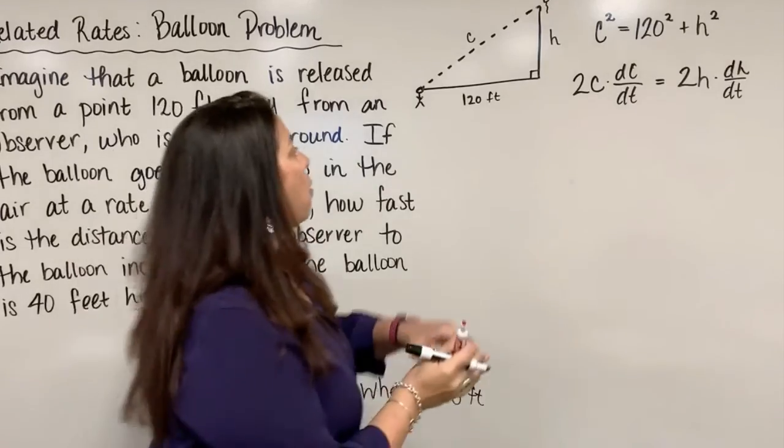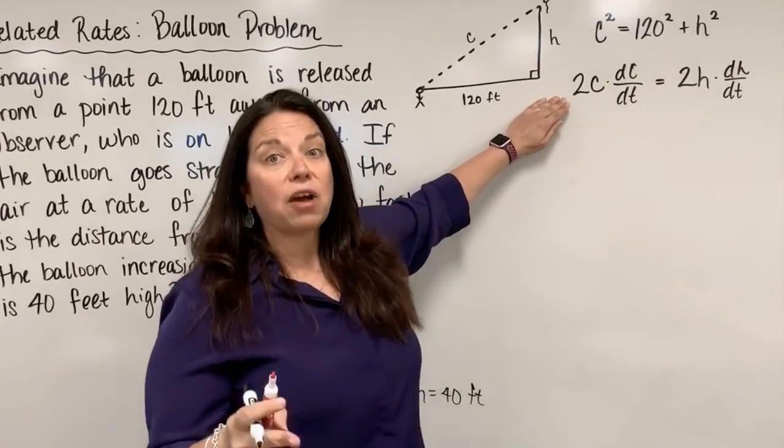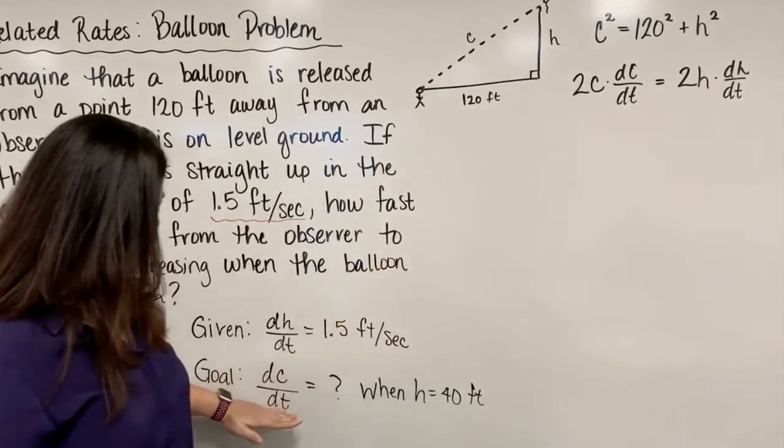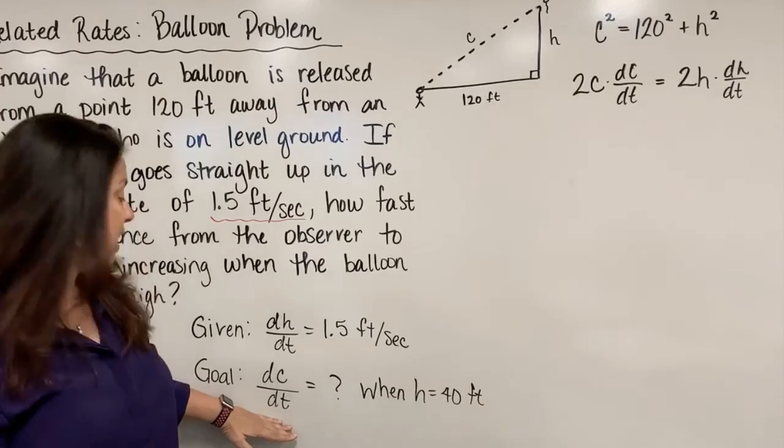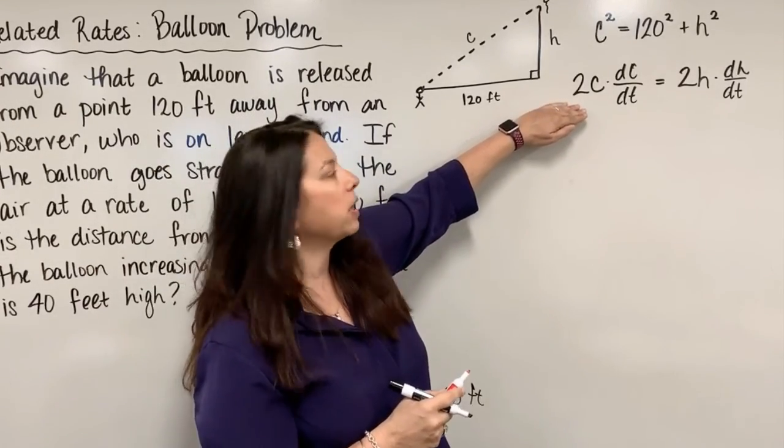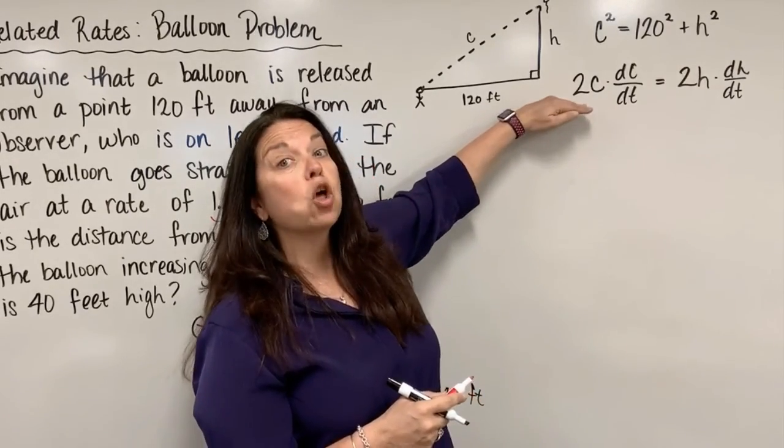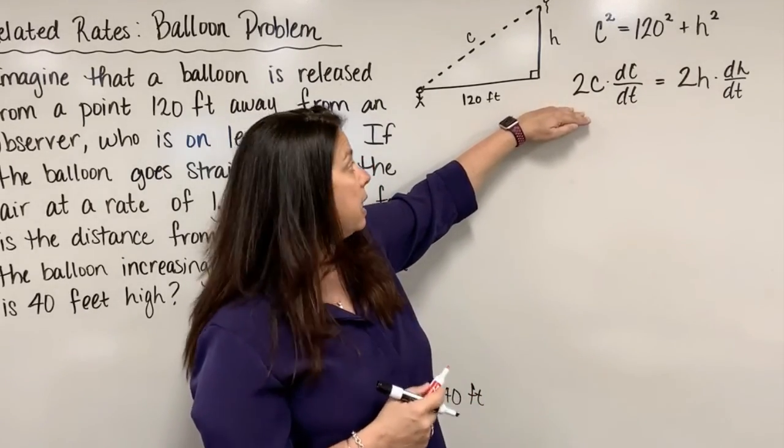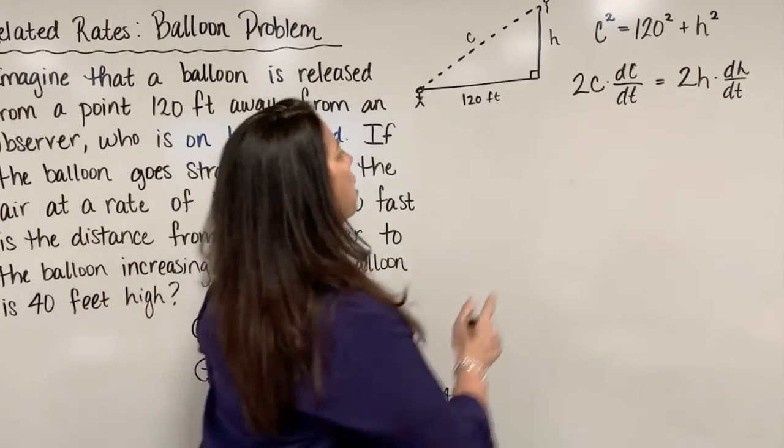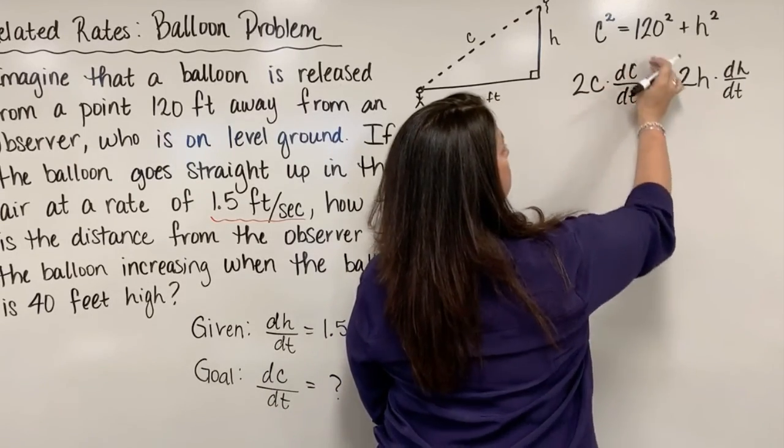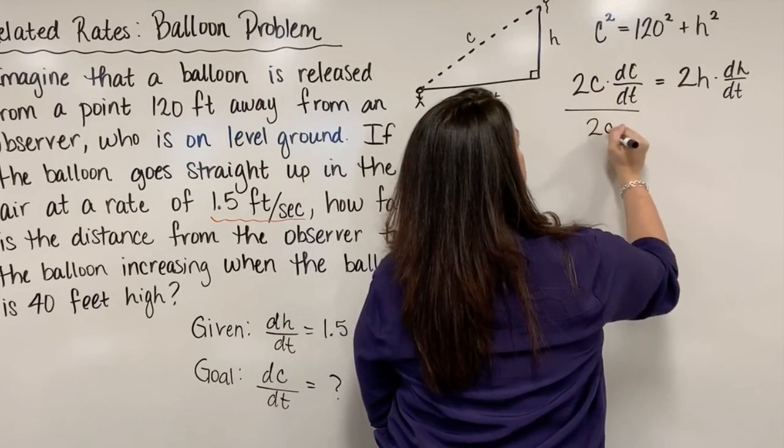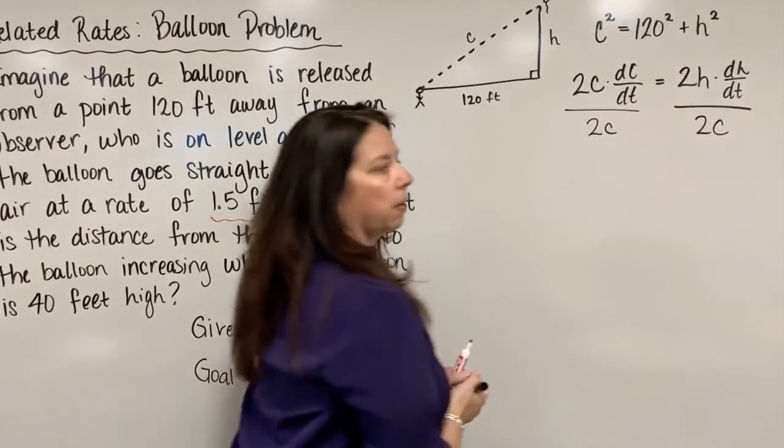Now at this point, I'm done finding the derivative implicitly. However, I need to be mindful that my goal is to find dC/dt. So let's do a little bit more algebraic manipulation of this equation so I end up solving for dC/dt, and then I can start evaluating for the things that I do know. What I need to do to get dC/dt by itself is divide by 2c on both sides of this equation.